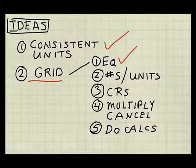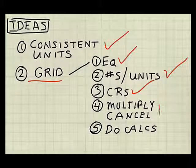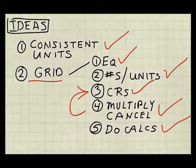Step one, I'm going to write down the equation. Step two, I'm going to insert numbers with their units. Step three, I'm going to multiply by appropriate conversion ratios. Step four, I'm going to multiply and cancel units. And if I need to, I'll iterate right back to step three. And then step five, the last step, do calculations. Let's begin.